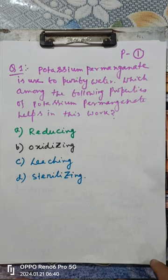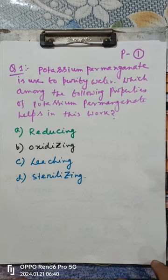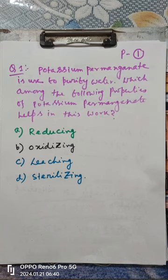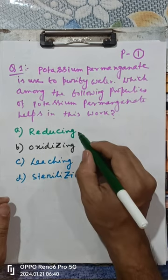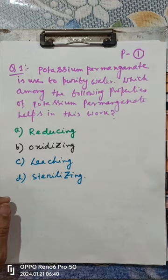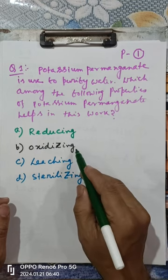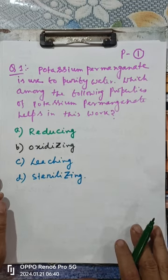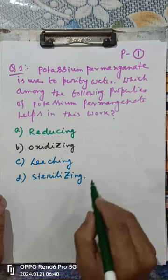The first question: potassium permanganate is used to purify water. Which among the following properties of potassium permanganate helps in this work? Potassium permanganate is a very important chemical used for cleaning water. Which property is used here? The first option — reducing — is not a property of potassium permanganate. Oxidizing is the most common property of potassium permanganate.